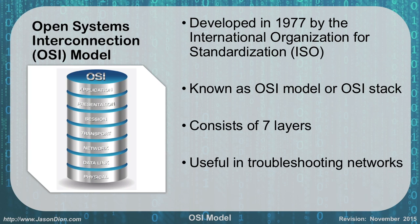The seven layers are: physical, data link, network, transport, session, presentation, and application. The reason this is important is it's very helpful when we troubleshoot our networks. You will see a lot of questions on the test where they'll give you a problem and describe it, and you'll have to figure out — based on their description — are we talking about a data link problem at layer 2, a transport layer problem at layer 4, or an application layer problem at layer 7?